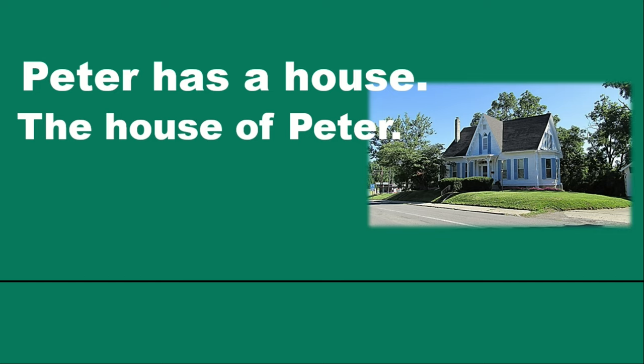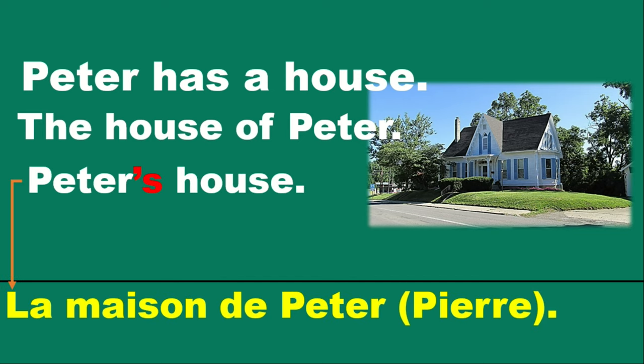The sentence 'the house of Peter' — Peter possesses the house. Now we want a more natural sentence, so we use possessive case: Peter's house. We take the possessor noun, put it in front, add apostrophe-s, and then the possessed noun — house.